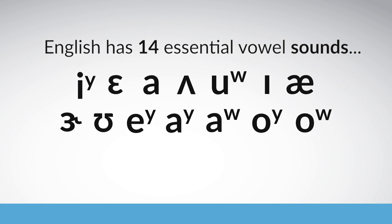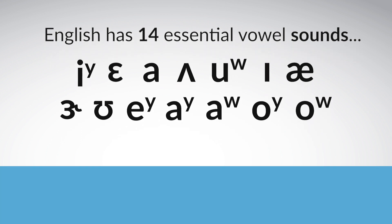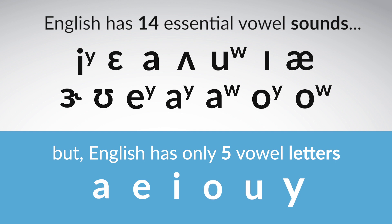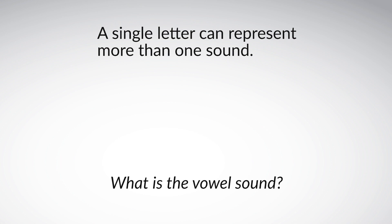This is challenging for most non-native English speakers, especially since English has only five vowel letters — A, E, I, O, U, and sometimes Y. Because English has more sounds than it does letters, a single letter can represent more than one sound.